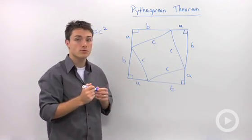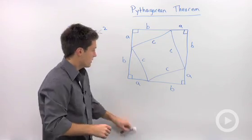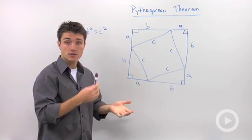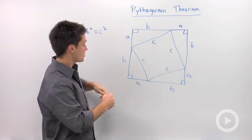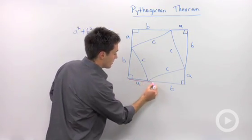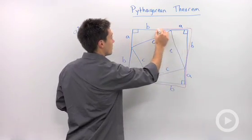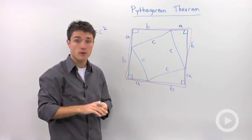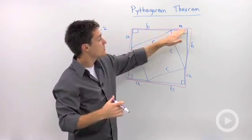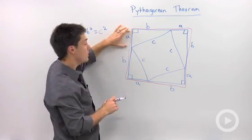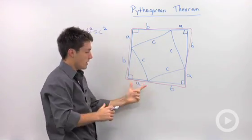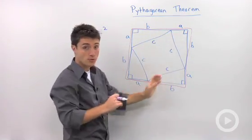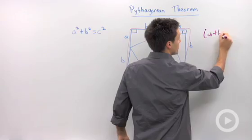The key to this proof is what you know about the area of squares and rectangles. Let's start with the large square. To calculate its area, I need to know one of the side lengths — and it looks like each side is a plus b.